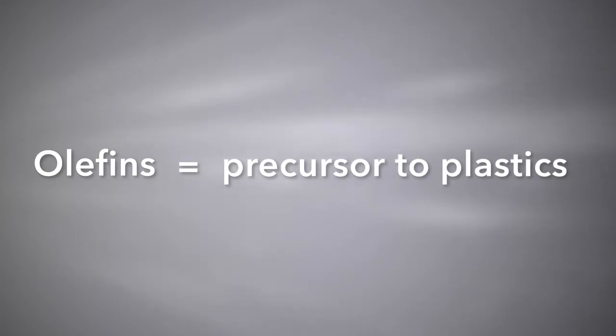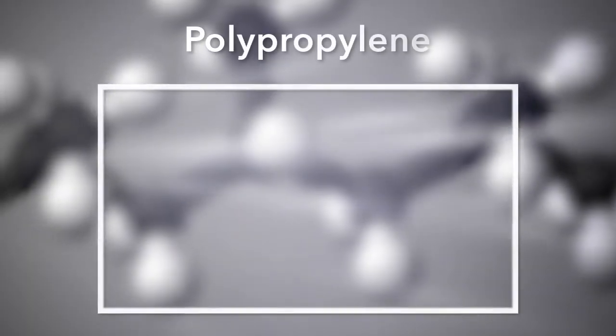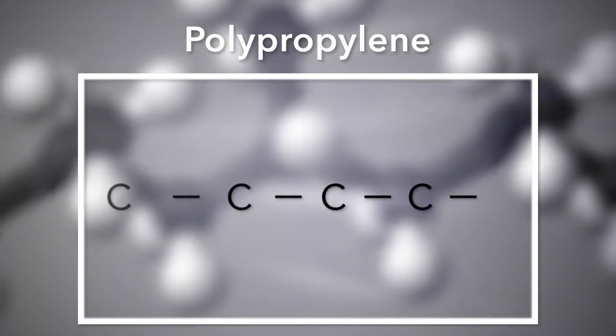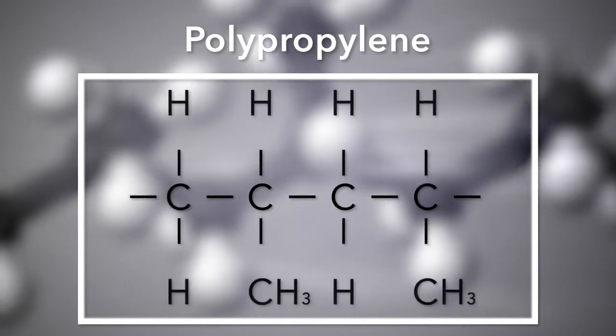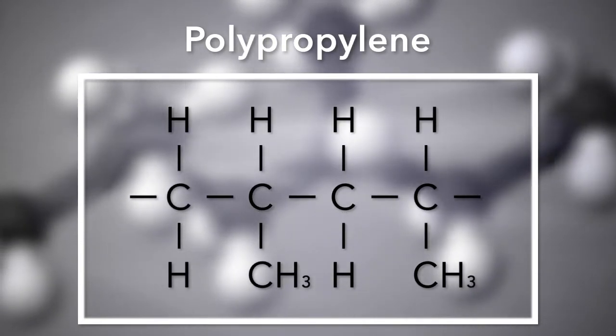Olefins, by definition, would be a precursor to plastics. Typical olefins are ethylene and propylene — those are your basic olefins. They are precursors to various other products, including polypropylene, where you start combining olefins, and various different sorts of plastics. So if you want to make plastics, you would make olefins from methanol in order to make those plastics.